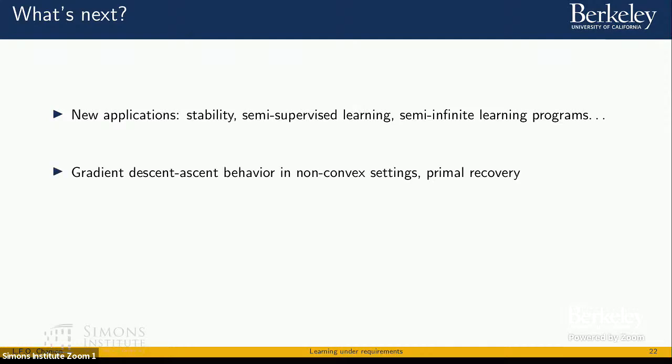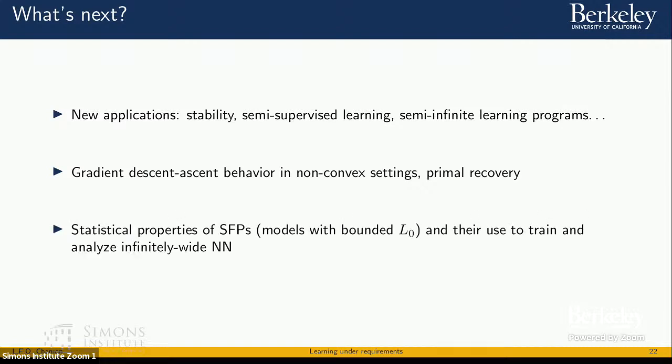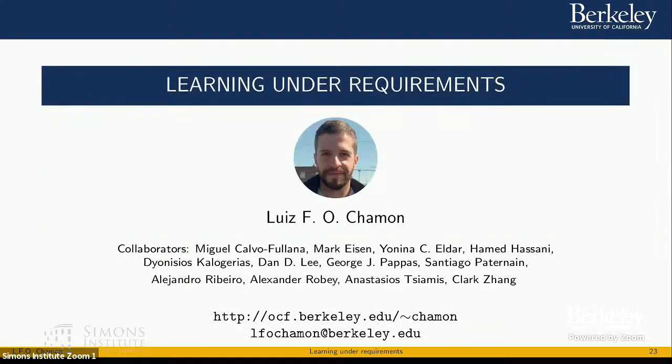Also I'm interested in algorithmic challenges. Those gradient descent ascent dynamics in non-convex settings, the behavior of these things are not as well understood as gradient descent dynamics in non-convex settings. And also the issue of primal recovery, which is a big problem in duality. And I'm also interested in looking at statistical properties, especially of these functional sparse complex problems, which have a lot of application, especially in their use in order to train and perhaps analyze infinitely wide neural networks. So you can find more information about this on my website. And if there's anything that you saw here that piqued your interest, please feel free to reach out to me or talk to me during this next year or so. Thank you.